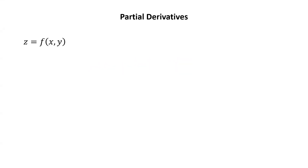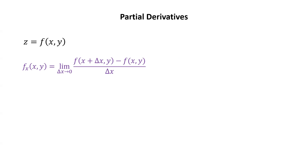Now let's consider a function of two variables. Let z equal f of xy. f sub x of xy is defined to be the limit as delta x goes to zero of f of x plus delta x, y minus f of xy over delta x. This is known as the partial derivative of f with respect to x. Notice that the definition looks just like a regular derivative, except there's an extra y that appears that really seems to be doing nothing — it's the same y in each of the two terms in the numerator.